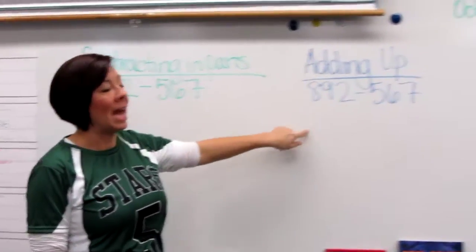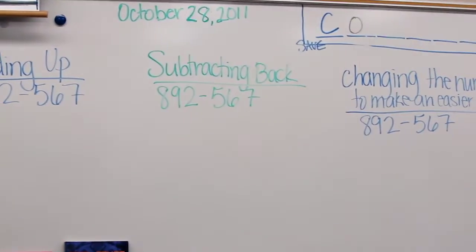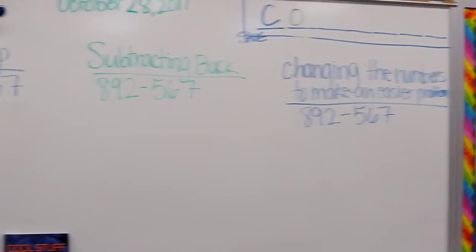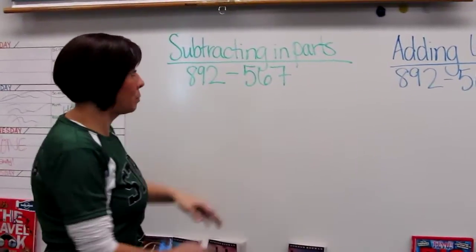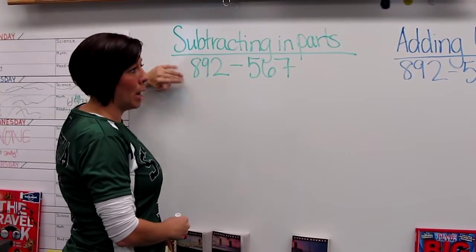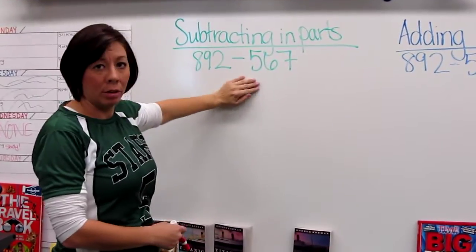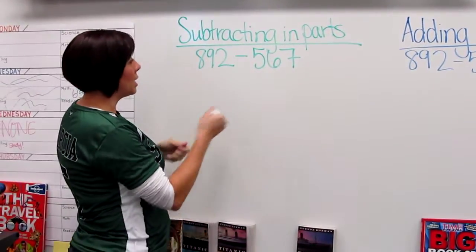Subtracting in parts, adding up, subtracting back, and then changing the numbers to make an easier problem. We'll start with subtracting in parts and I'm going to use the same problem for each of these: 892 minus 567.